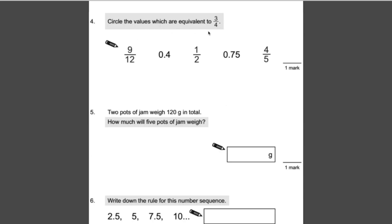Number 4: circle the values which are equivalent to 3 quarters. In this case it would be 9 twelfths. If I multiply both the top and the bottom by 3, I would have 9 on the top and 12 on the bottom. 0.4 is the same as 4 tenths, so that's not correct. You should know that 0.75 is the decimal equivalent to 3 quarters. It's very important you know that. And 4 fifths is not the same as 3 quarters, so it's these two.